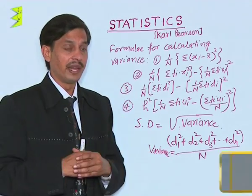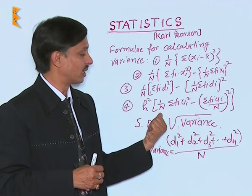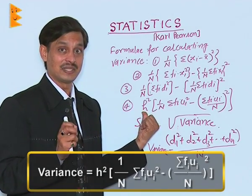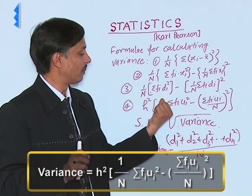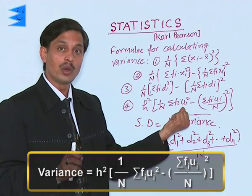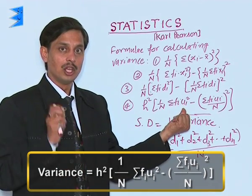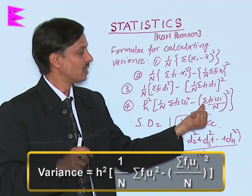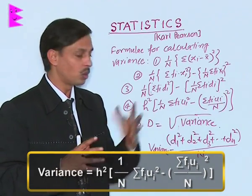If using the step deviation method, the formula is h², where h is the class size, multiplied by: (1/n)Σfᵢuᵢ² - [(Σfᵢuᵢ)/n]². Here uᵢ = (xᵢ - assumed mean)/h.